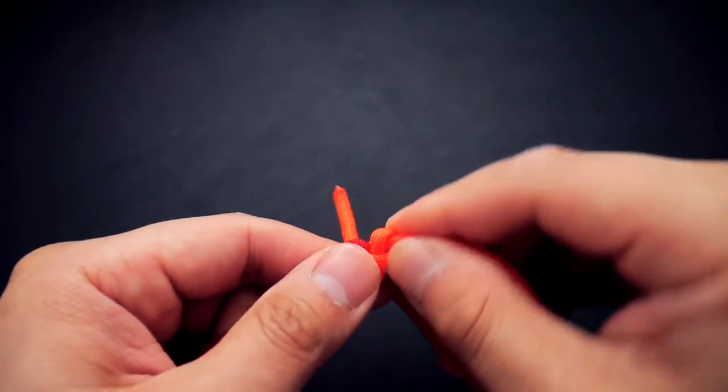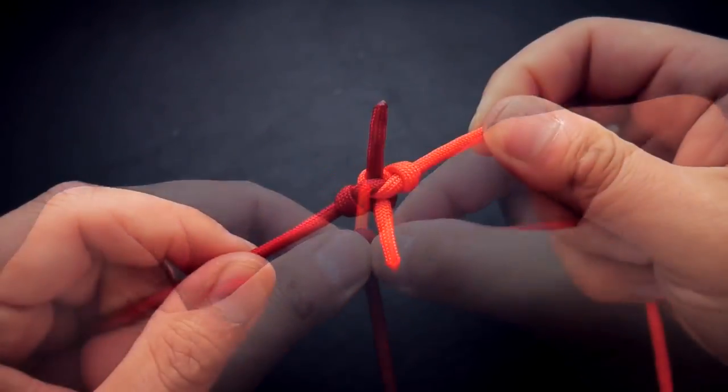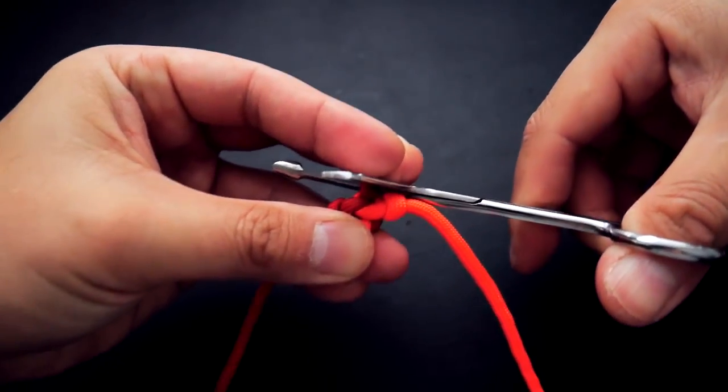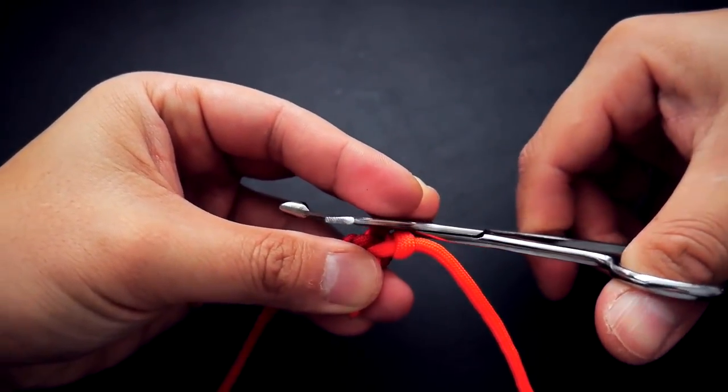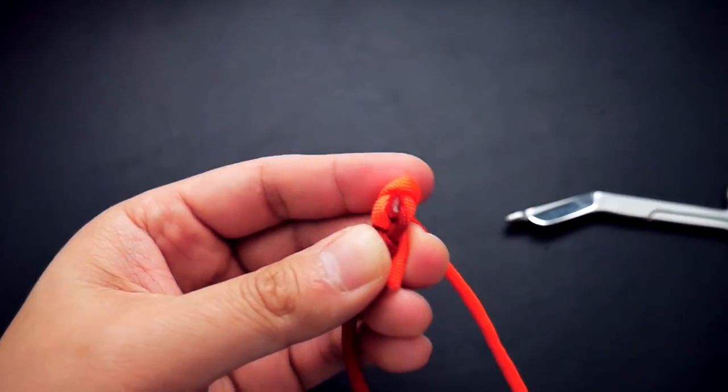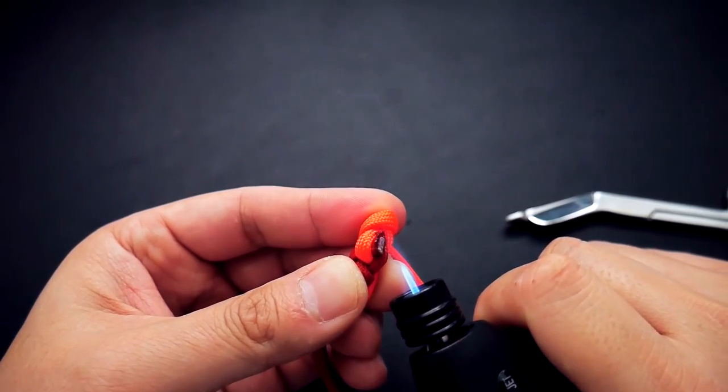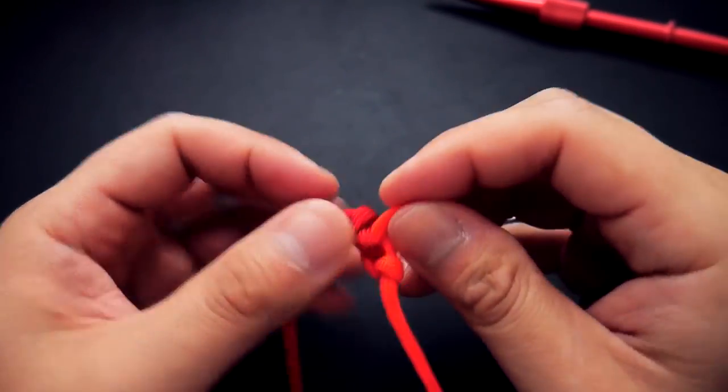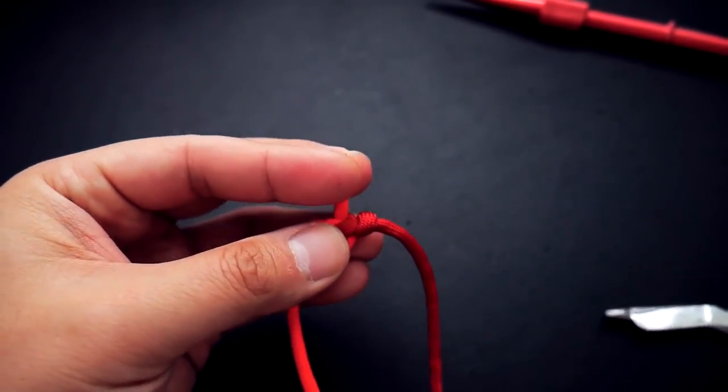Next we're going to take our scissors and clip off the excess cord. These cords are running out the back of the knot. Don't clip it too short—you want to be careful. Melt that cord so it's nice and melted, then press it down with a smoothing tool or your knotter's tool, whatever you have. Do that for both excess cords.